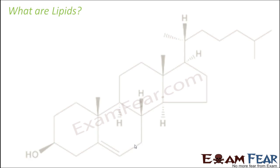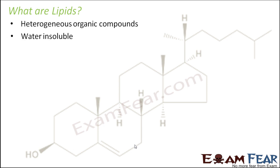So what are lipids? Lipids are heterogeneous organic compounds. They are made up of carbon, hydrogen and oxygen — they have more carbon and hydrogen and less oxygen. They are water insoluble. They also contain small amounts of minerals like phosphorus, nitrogen and sulfur. Since lipids have less oxygen, they need more oxygen for oxidation and therefore release more energy than carbohydrates.